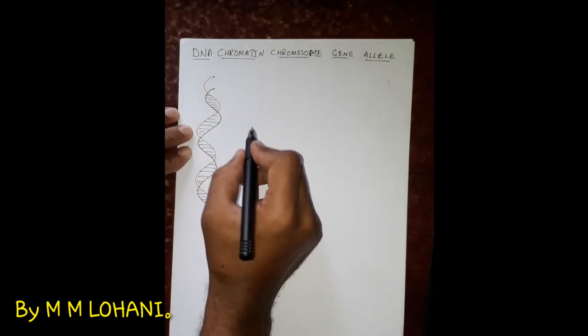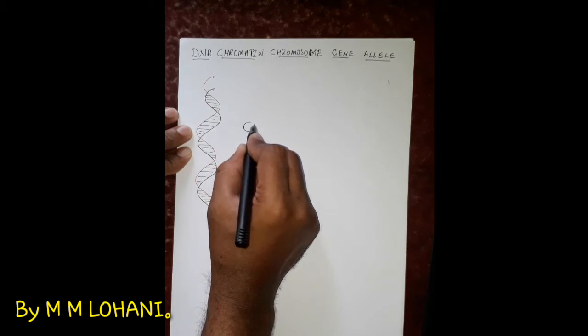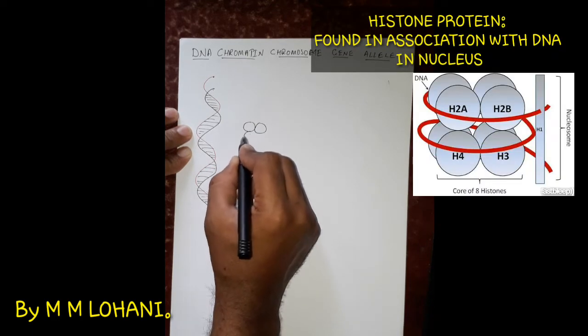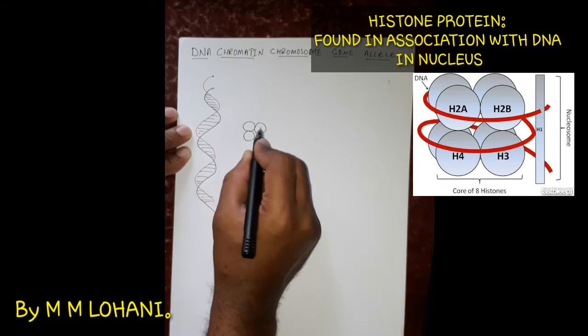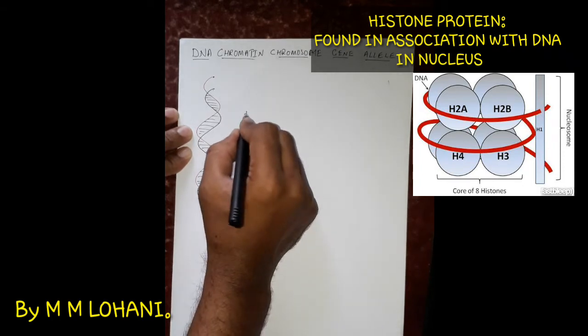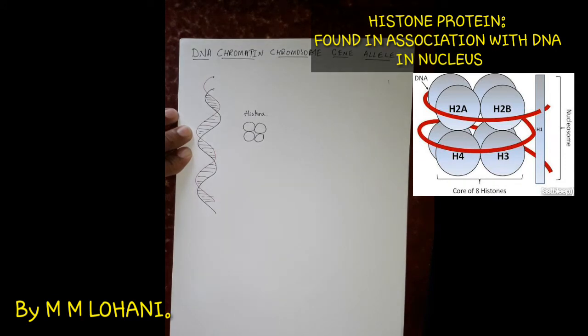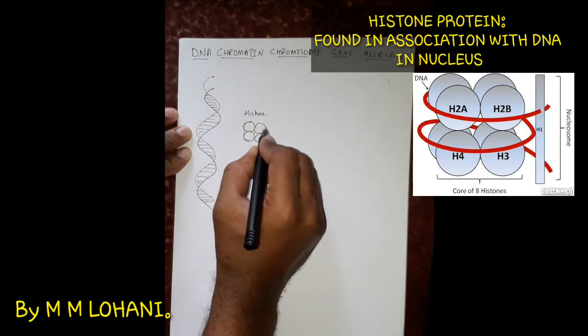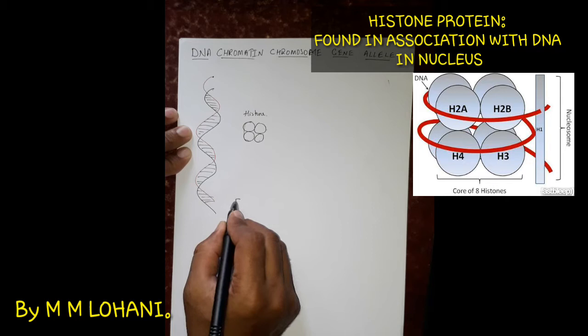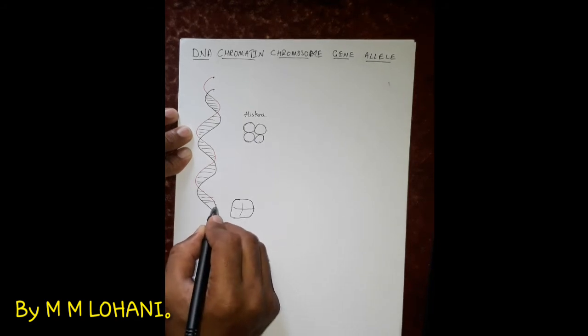In the nucleus, along with the DNA there is a specific type of protein which is called histone proteins. Actually there are eight histone proteins bundled together. Here you can see only four whereas another four are on the backside. So these are called histone proteins which are specifically found in the nucleus in association with their DNA. So these histone proteins, I am going to draw the histone protein here. Of course they are four in number.